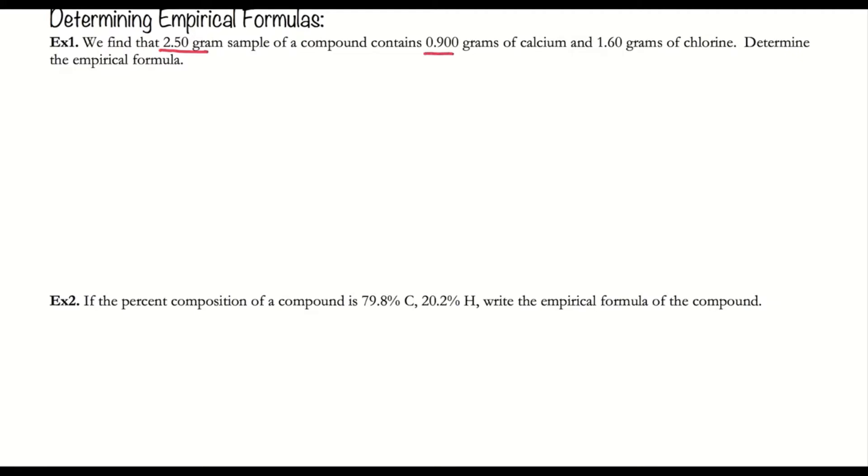For the first one, I have a 2.50 gram sample of a compound that contains 0.90 grams of calcium and 1.60 grams of chlorine. I don't need to know about the 2.50 grams because all I care about is how many grams of calcium and chlorine I have.